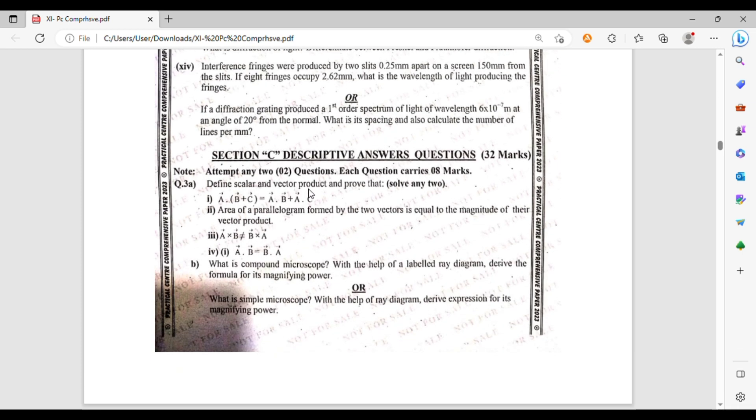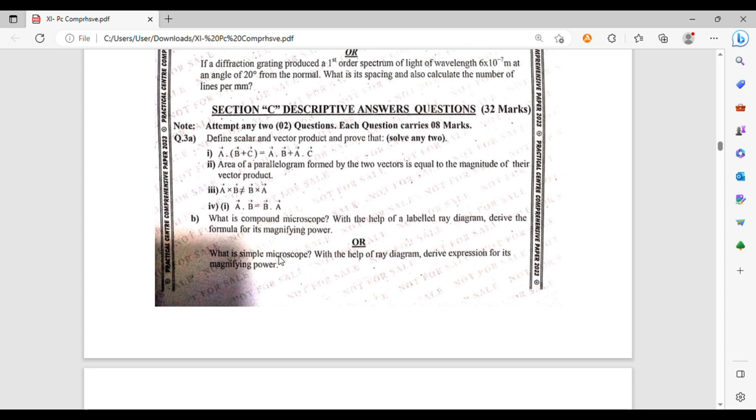Section C: Question number 3, part a: Define scalar and vector product. Prove that a dot (b plus c) equals a dot b plus a dot c. The area of a parallelogram formed by two vectors is equal to the magnitude of the vector product. a cross b does not equal b cross a, but a dot b equals b dot a. Part b: what is compound microscope? With the help of labeled ray diagram, derive the formula for the magnifying power. Or what is simple microscope? With the help of ray diagram, derive an expression for the magnifying power.